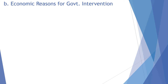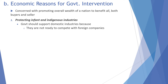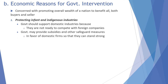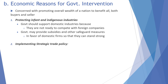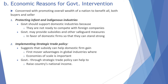Economic reasons for government intervention are concerned with promoting the overall wealth of the nation for the overall benefit of both buyers and sellers. It includes protecting infant and indigenous industries — the government supports domestic industries because they are not ready to compete with foreign companies, providing subsidies and other safeguard measures. It also involves implementing strategic trade policy, where subsidies can help domestic firms gain first-mover advantage in global industries where economies of scale are important, helping to raise the country's national interest.